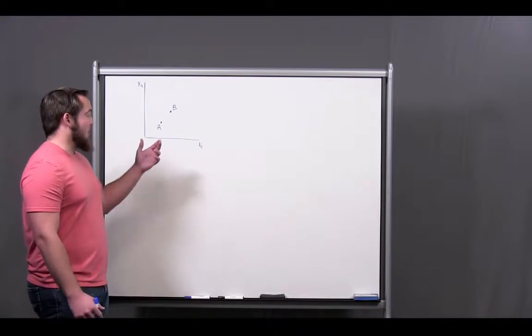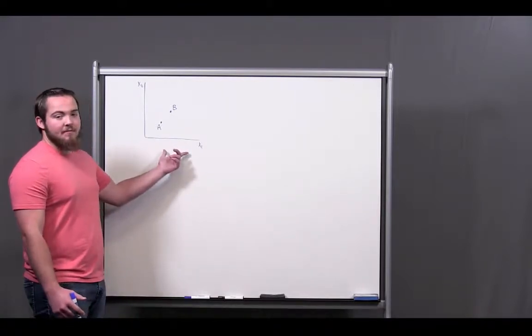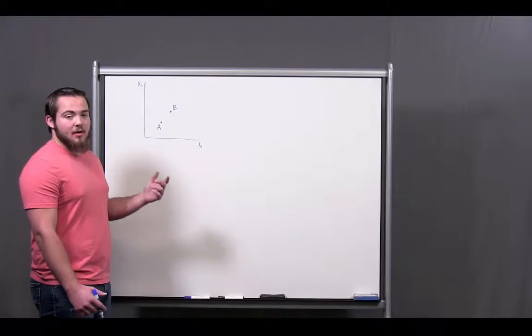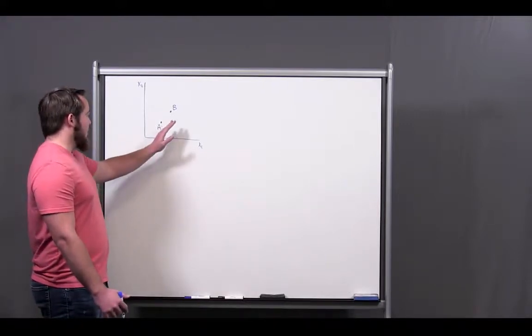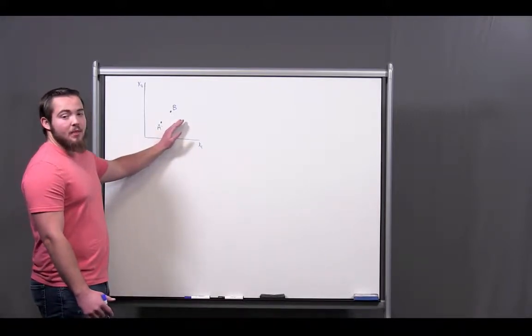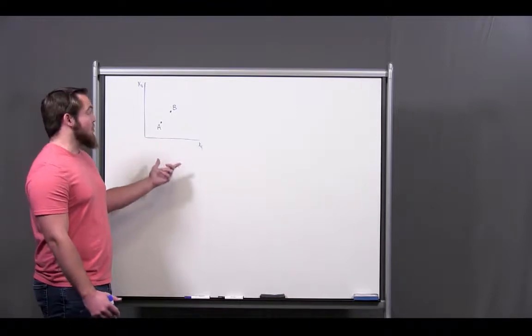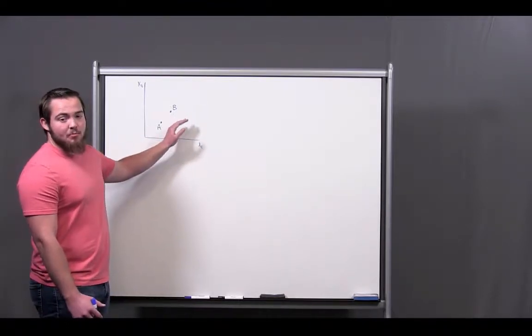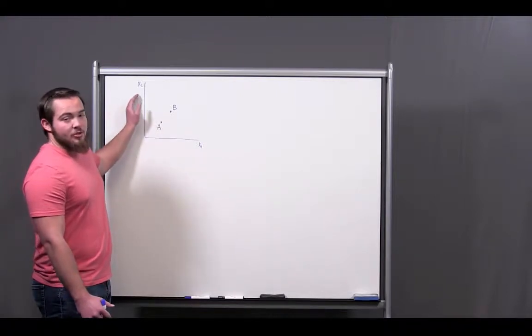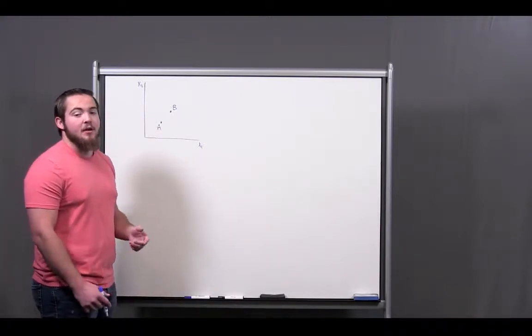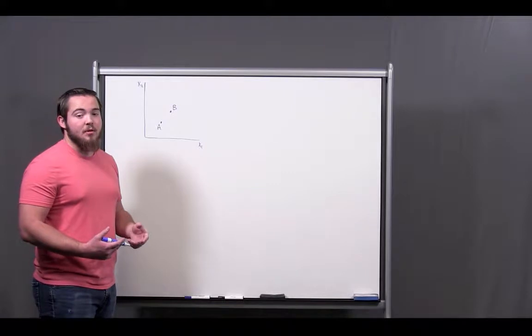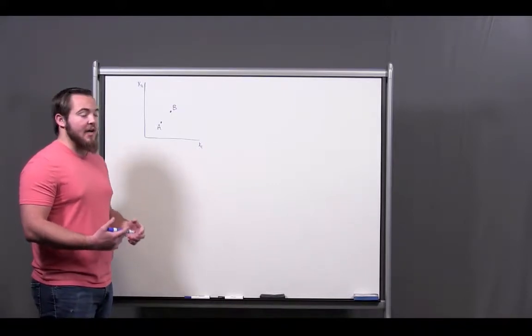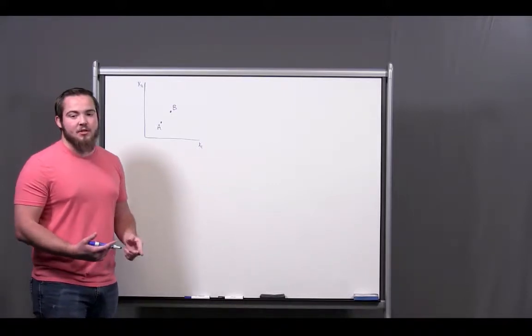To get started, I'm going to have you look at a simple two-input graph. When we're talking about bundles, it's tempting to say, let's look at A and B, and when I ask you which one is preferable, it's tempting to say B because it has more of good one and good two. And a lot of times you'd be right, but it's not something that we can assume. So today we're going to talk about monotonicity, especially how to prove that we have monotonicity.